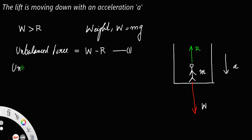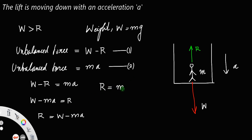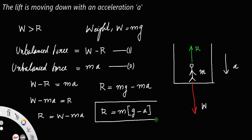From Newton's law, the unbalanced force equals mass into acceleration, ma — here the mass of the person into its acceleration a. Equating these two, you get W minus R equals ma. Rearranging: R equals W minus ma, or R equals mg minus ma, which gives R equals m(g minus a). This is the apparent weight of a person in a lift accelerating downward.